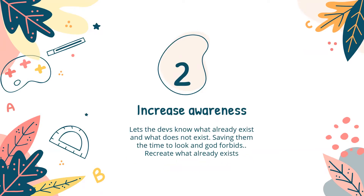For increasing awareness — let's say a couple of devs are working on the front end. One of them made components A, B, and C. Without Storybook, I might not know they exist and accidentally recreate something already there. Storybook saves you from that — just go to the project and see the list.